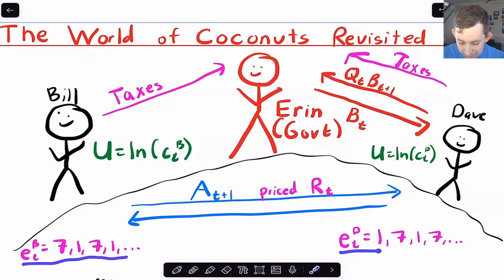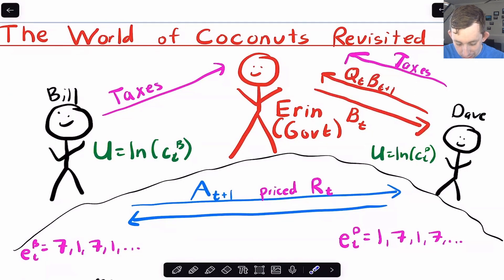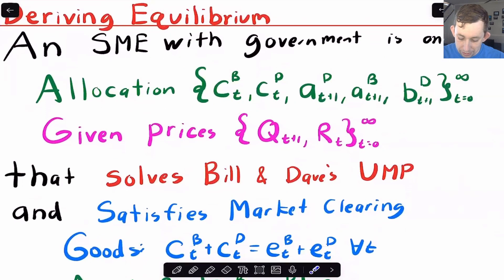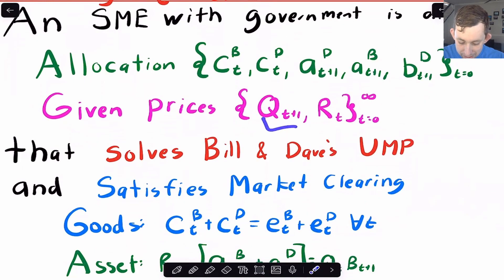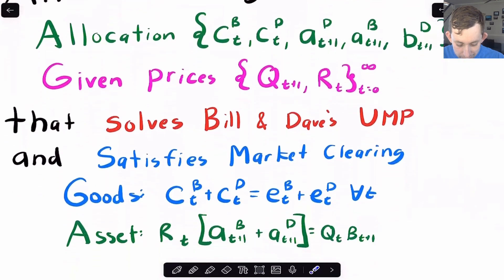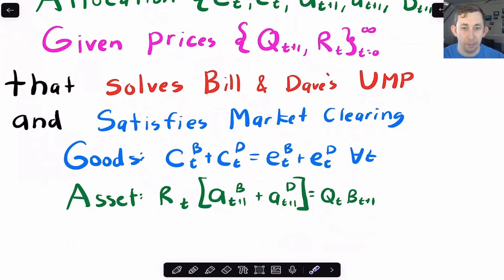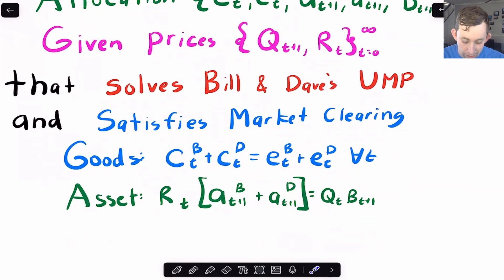Bill and Dave each have an endowment: Bill gets seven coconuts in even periods and one coconut in odd periods, while Dave gets one coconut in even periods and seven in odd periods. The equilibrium looks the same as the sequential market equilibrium we've seen before, but now we have both assets and bonds. Prices include both the bond price and the asset price. The asset market clearing condition is now different — assets don't have to sum to zero because government bonds cover the difference, so the sum of assets equals the value of the bonds.